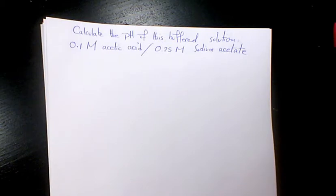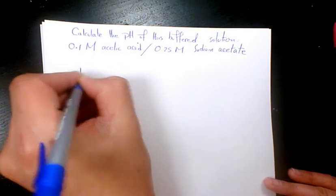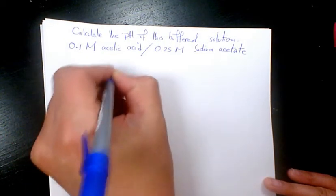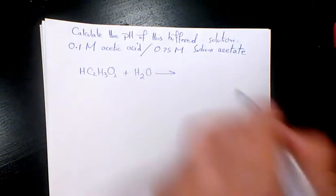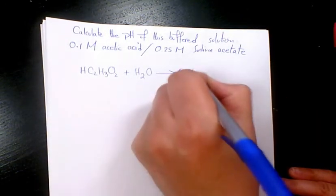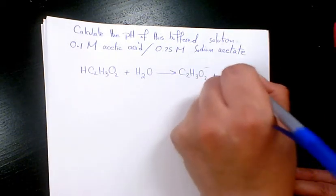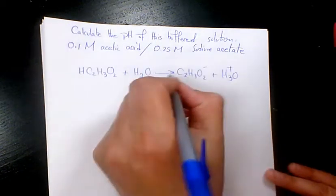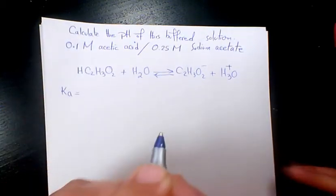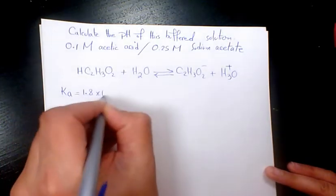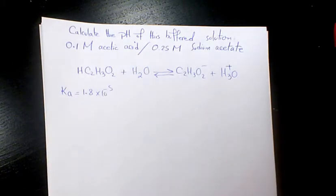These are all related to acetic acid and sodium acetate. Acetic acid is the weak acid, and sodium acetate is the salt of this weak acid. Acetic acid is HC₂H₃O₂. When it reacts with water, since it's an acid and a proton donor, it gives C₂H₃O₂⁻ plus hydronium ion. Since it is a weak acid, we have a reversible reaction and we need to define the Ka — the acid dissociation constant — which for this acid is 1.8 × 10⁻⁵.